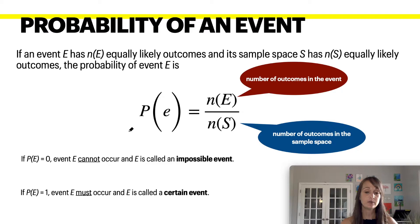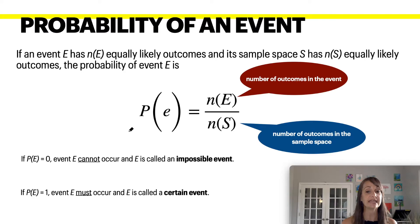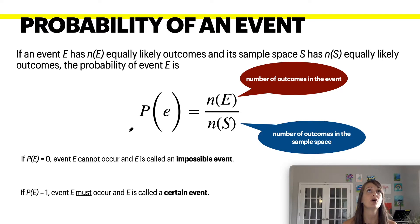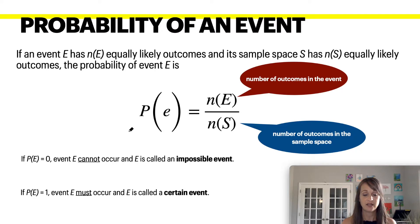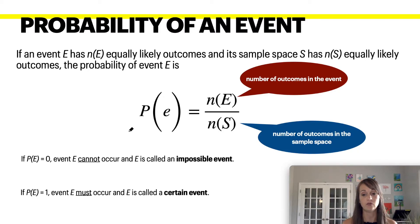The formula is the number of outcomes in the event divided by the number of outcomes in the sample space. There are two special cases to know. If the probability is zero, that means the event can't occur — it's an impossible event. For example, what's the probability of rolling an eight with one die? That's an impossible event; there's no possibility of rolling an eight. If the event must occur, it is a certain event, which equals one.